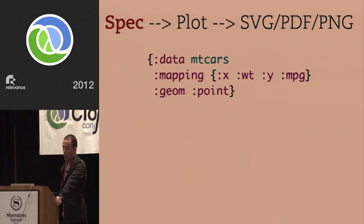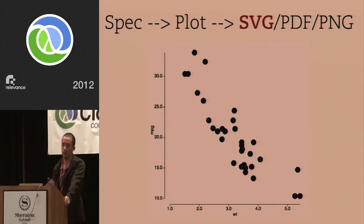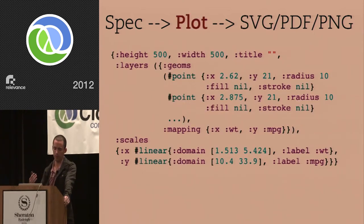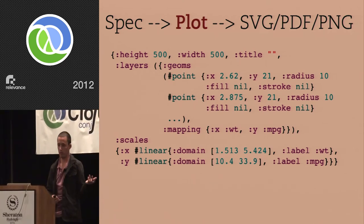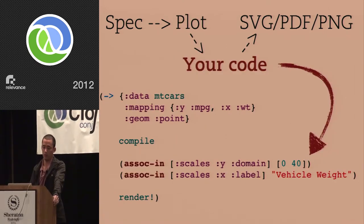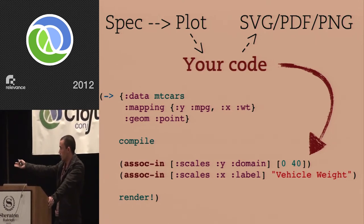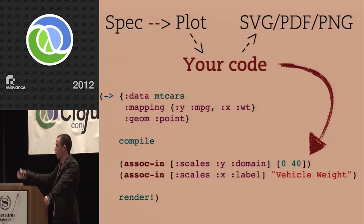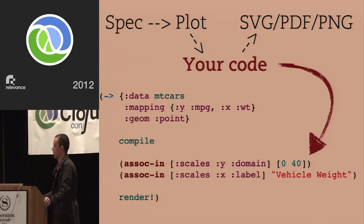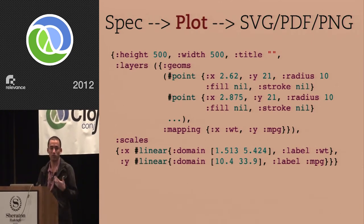To give you an example: the actual workflow in the system is you start with this specification and it goes through a kind of compiler and turns into a scene graph kind of thing, and then it gets rendered out into SVG or PDF or PNG or whatever you want. What's cool about this scene graph is that it's just another huge data structure — just a big map with sub-maps and vectors. You can manipulate it with your own code, so you can say: here's my specification, I want to compile it into this scene graph, and then you can add your own code into this process. You can assoc-in and say I want to update the Y axis to go from zero to 40 instead of whatever extent was calculated automatically from the data, or I want to change labels. You can do all this very easily because it's just code.